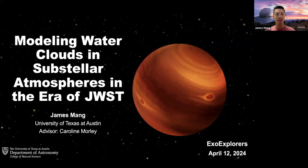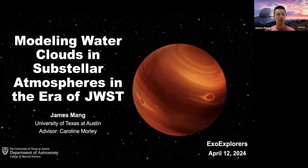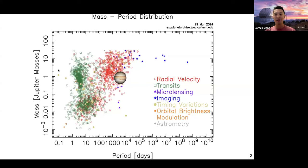Let's set the scene. Here I'm showing a figure of confirmed exoplanets based on their mass on the y-axis and period on the x-axis, color-coded by detection method, with Jupiter shown for reference. JWST is really pushing us into the regime where we can actually study these temperate giant planets — RV-detected Jupiter analogs — that have similar bulk properties and effective temperatures to Jupiter and the gas giants in our own solar system. It's really exciting to now characterize these planets, which we couldn't have done before.